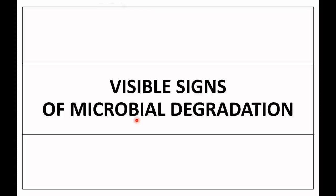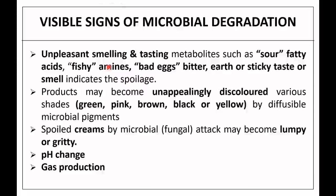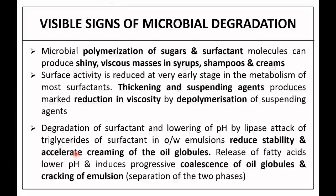What are the visible signs of microbial degradation? There may be unpleasant smell or taste like sour fatty acids, fishy amines, bad egg odour, or bitter earthy sticky taste indicating spoilage. Products may become discoloured — green, pink, brown, black, or yellow. Spoiled creams may become lumpy and gritty. There may be pH changes and gas production. Microbial polymerization of sugars and surfactants may produce shiny, viscous masses in syrups, shampoos, and creams. Surface activity is reduced early in surfactant metabolism, and depolymerization causes marked reduction in viscosity of thickening and suspending agents.